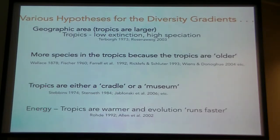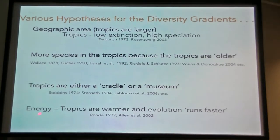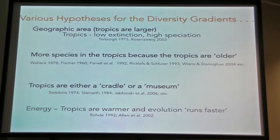The tropics could either be a museum — holding on and maintaining older lineages — or a cradle, actively generating new diversity. It could also be that because the tropics have more energy and are warmer, rates of evolution there are faster. These are the types of hypotheses we are now interested in going back and assessing.